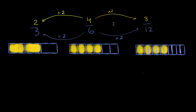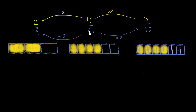So these are all equivalent fractions. The big takeaway here is: start with a fraction. If you multiply the numerator and the denominator by the same quantity, you're going to have an equivalent fraction. If you divide the numerator and the denominator by the same quantity, you are also going to have an equivalent fraction.